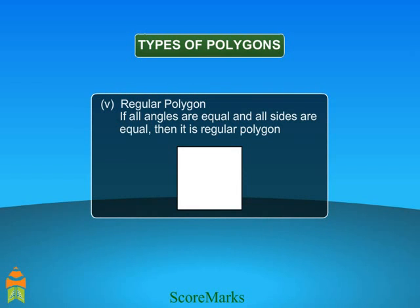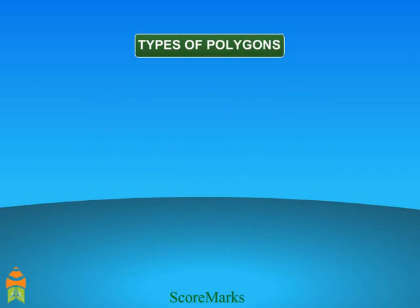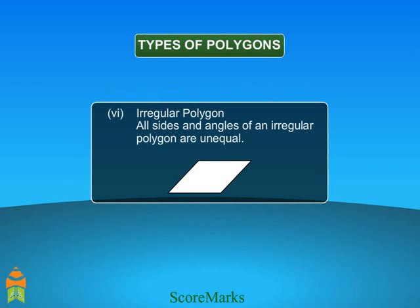Regular Polygon: they have equal angles and sides. Irregular Polygon: they do not have equal angles and sides.